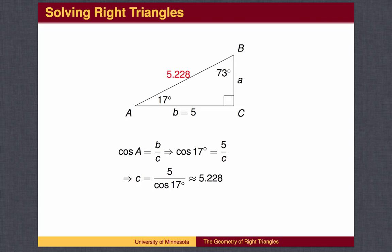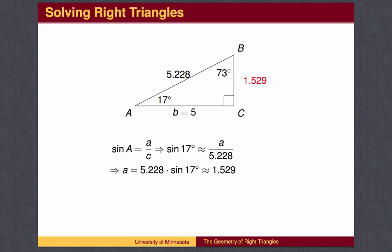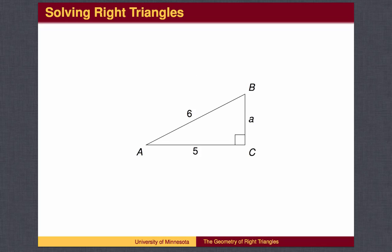We could then use the Pythagorean Theorem to find the length of the hypotenuse. Another approach is that we could have used the cosine of A to find the length of the hypotenuse, and then use the sine of A to find the missing leg. If you are given the lengths of two of the sides of a triangle, you can find the third side by the Pythagorean Theorem. But how do we find the angles?